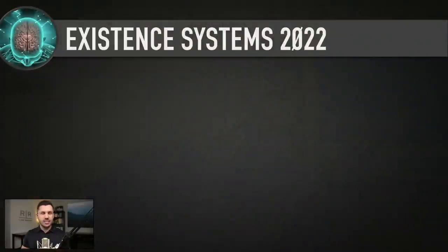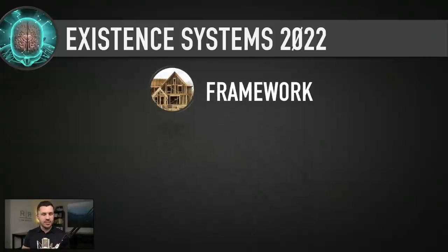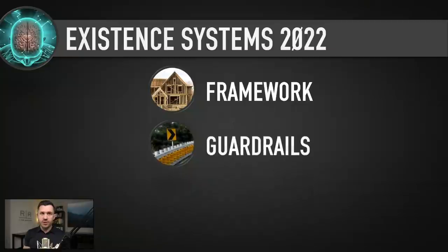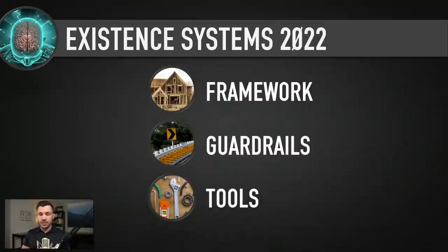We're talking today about existence systems 2022 — this is the digital version. We've got three different broad topics to cover: first, the framework — why do we need an existence system, how is this useful, what can you take from this and implement? We're going to talk about guardrails, a very important concept that I learned a lot about this year that really helped me become a lot more productive. And lastly, I want to share some of the actual tools that I use.